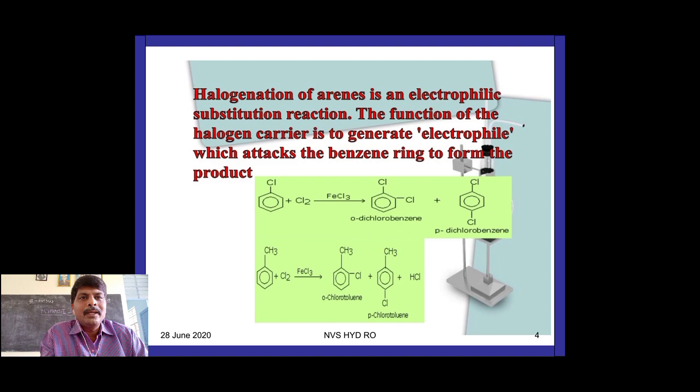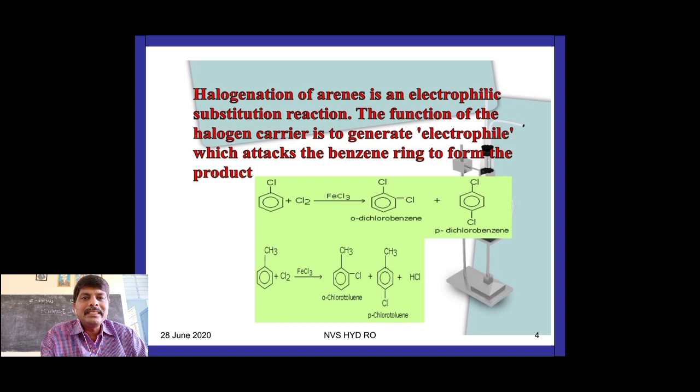The function of the halogen carrier (Lewis acid) is to generate an electrophile — Cl⁺ — which attacks the benzene ring to form the product. The role of FeCl3 is to generate the electrophile Cl⁺, and that Cl⁺ attacks benzene to give chlorobenzene.